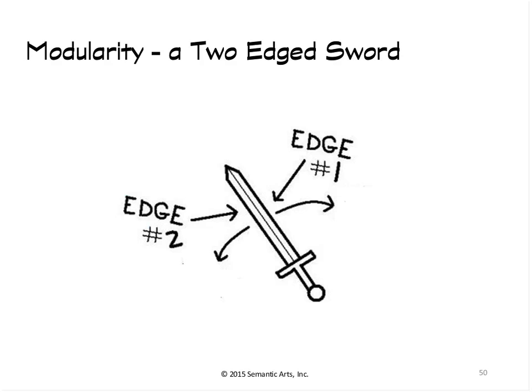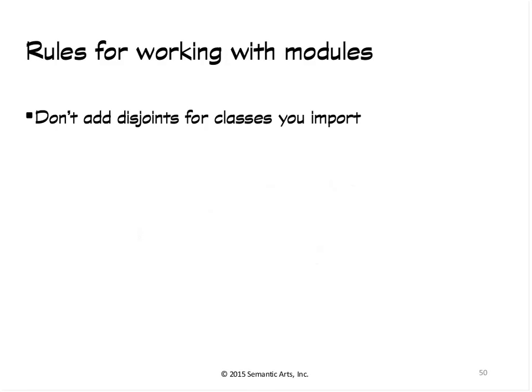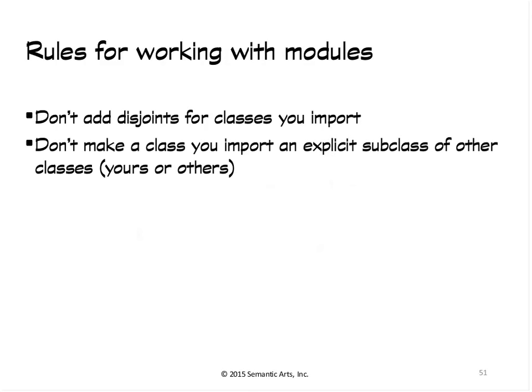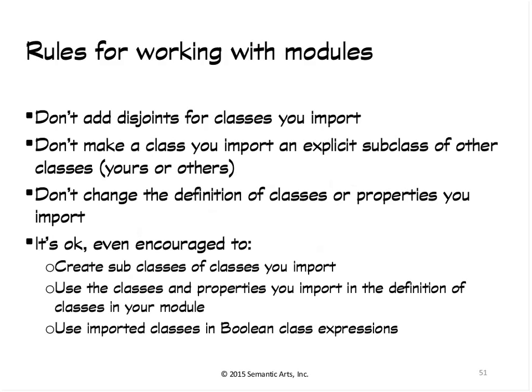I want to talk a little bit about modularity. Modularity is a two-edged sword — it allows groups to work independently, but it also allows groups to screw things up. Just a handful of things to think about: if you're going to divide things into modules, and if you inherit somebody else's modules, don't introduce disjoints to the things you inherited — you're essentially changing the definition of something you've inherited. And pretty much all these things mean: don't change the definition of something you inherited, but it is okay to derive definitions from things you inherited.